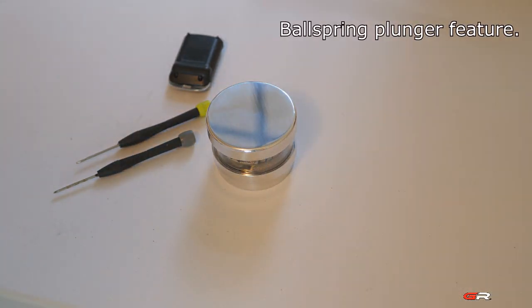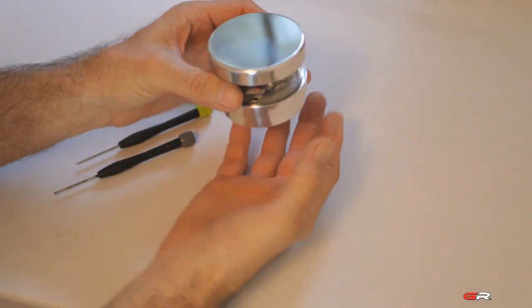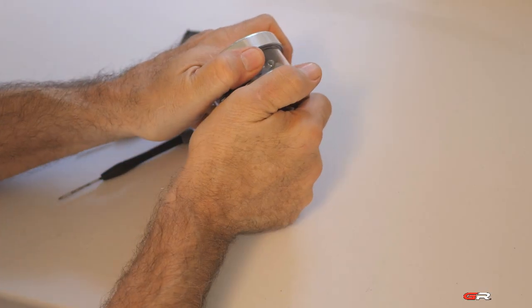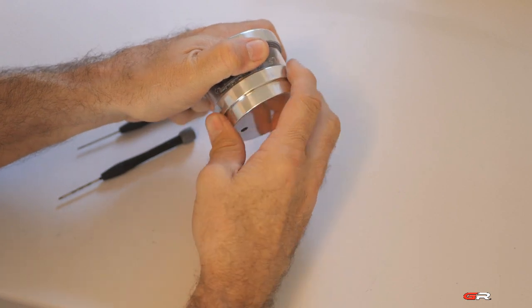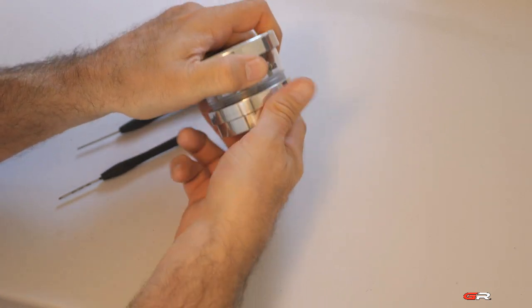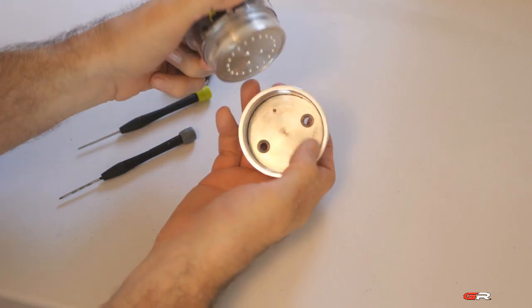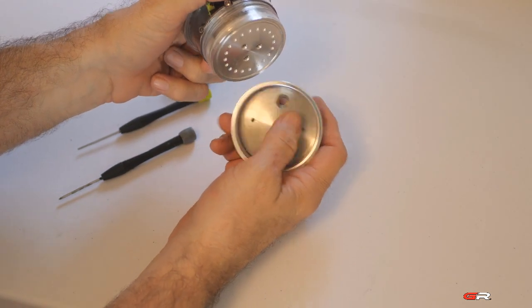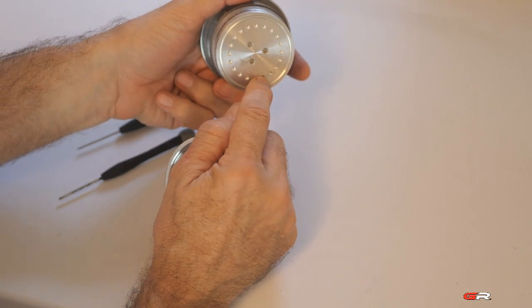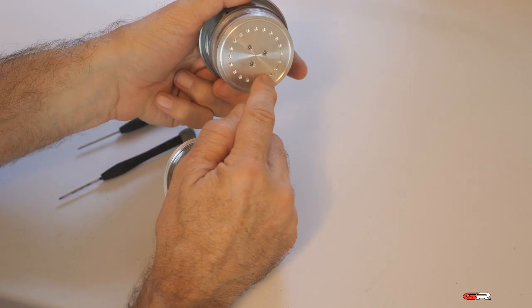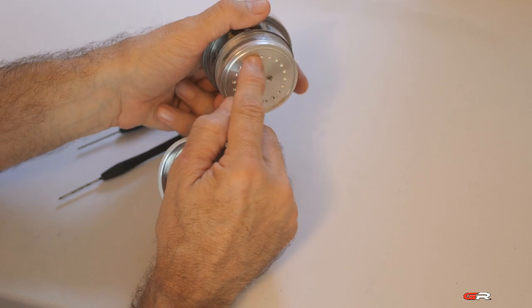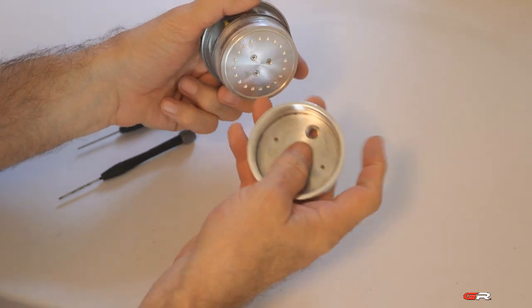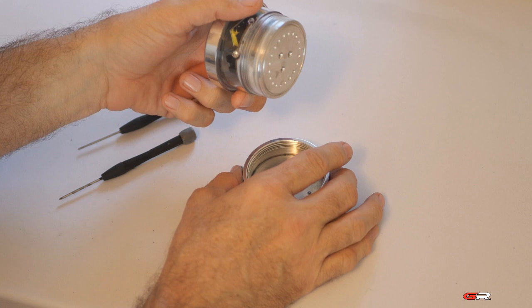Alright so we've gone ahead and taken one of the units out of the package here and let's just go over some basic features. Now you'll hear this ratcheting noise as you unscrew the bottom here and there's a reason for that. There is a ball spring plunger on each side, a spring-loaded ball bearing, and as you tighten it down those ball bearings ratchet up into these little cavities here and hold the unit in place so that it doesn't come loose during vibration.